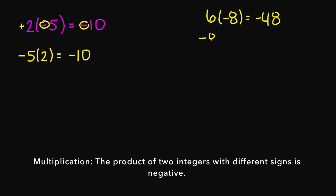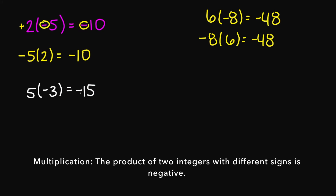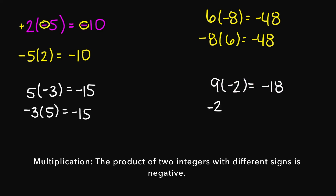Negative 8 times 6 is also going to be negative 48. 5 times negative 3 is negative 15. And negative 3 times 5 is also going to be negative 15. 9 times negative 2 is negative 18, and negative 2 times 9 is also going to be negative 18.